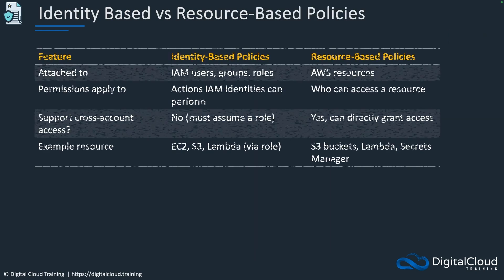Let's compare these two side-by-side. Identity-based policies are attached to IAM users, groups, and roles, whereas resource-based policies are applied directly to the AWS resource — and not all resources support a resource-based policy. Permissions in identity-based policies apply to the IAM identities the policy is attached to, while resource-based policies are applied directly to the resource itself. The only way to do cross-account access with an identity-based policy is by assuming a role, whereas with resource-based policies you can directly grant cross-account access, covering any API call or service.